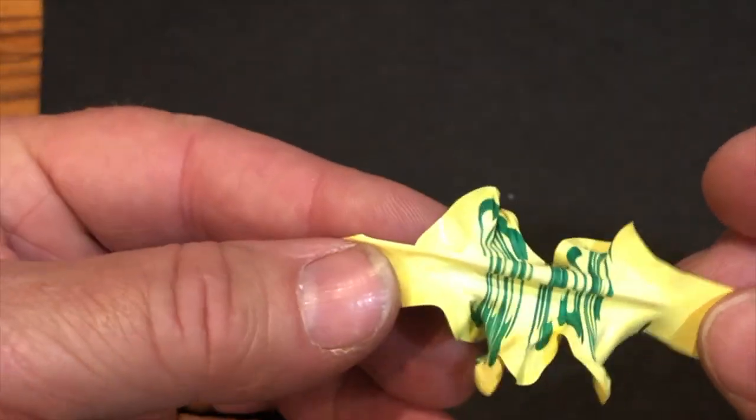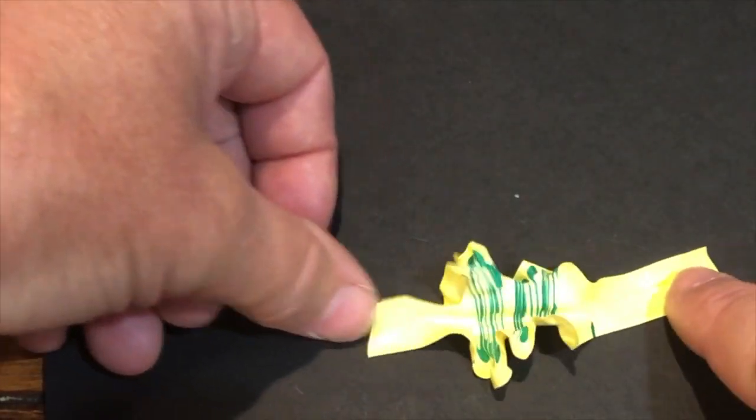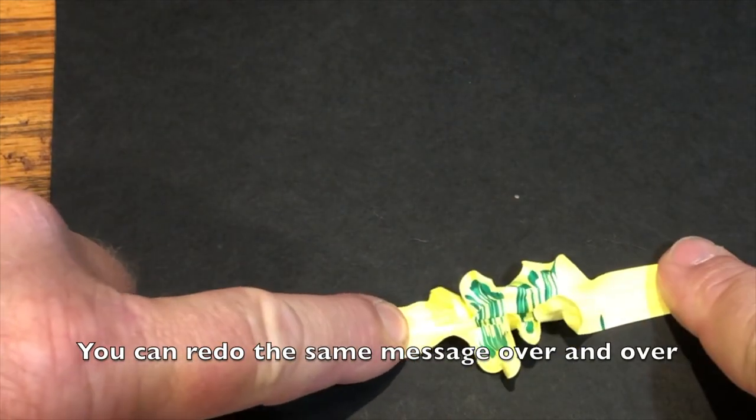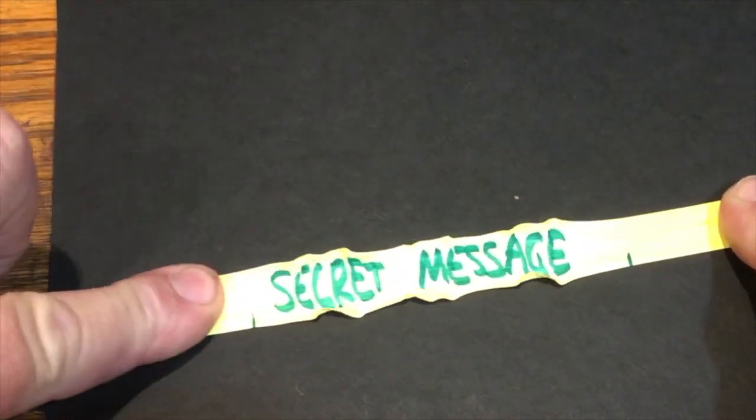So you grab both ends now. That's why you have to have extra ends. And I'm going to put it down here and pull, and you will reveal your secret message right here. Secret message. Pretty cool, huh?